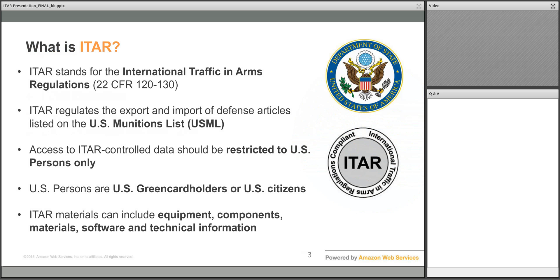What is ITAR? International Traffic and Arms Regulations control the export of defense-related articles. The regulation states that a non-US person cannot have physical or logical access to the article stored in an ITAR-controlled environment. US persons are defined as individuals who are either US citizens or US green card holders. ITAR compliance requires customers to ensure that information considered technical data by the US munitions list is not inadvertently distributed to foreign persons or foreign nations. Technical data may only be shared with US persons.